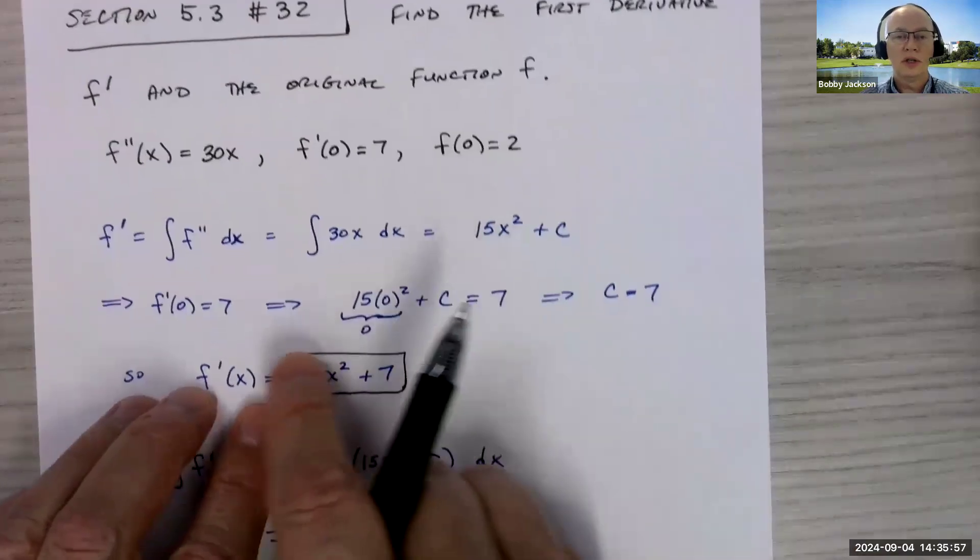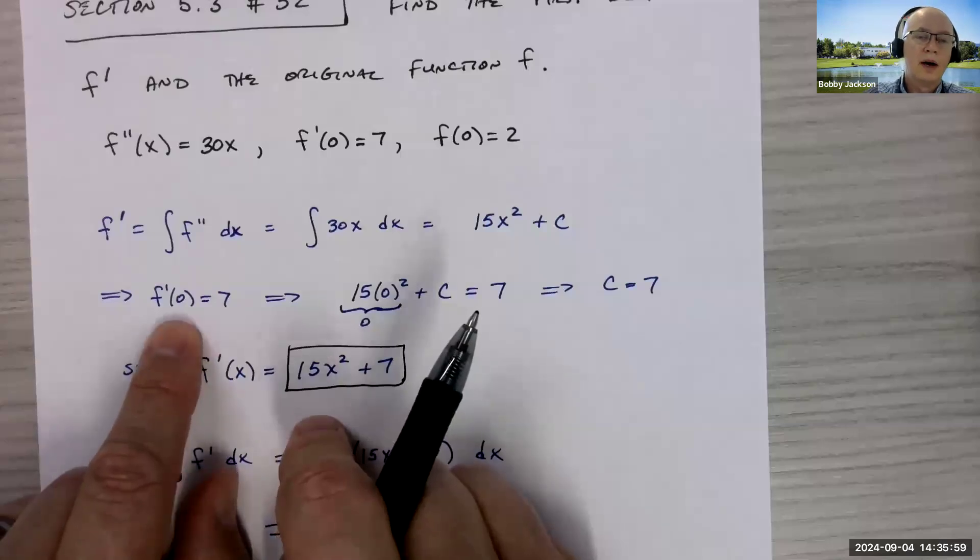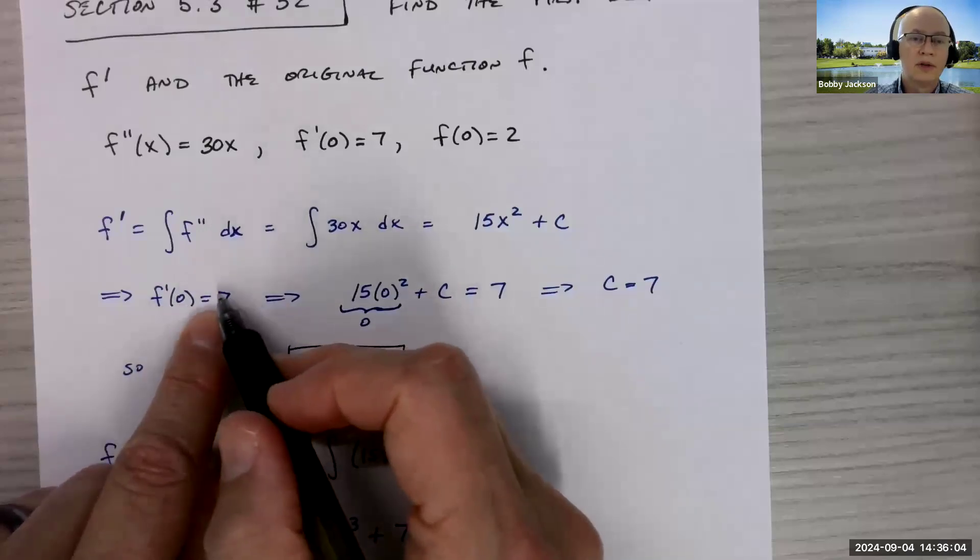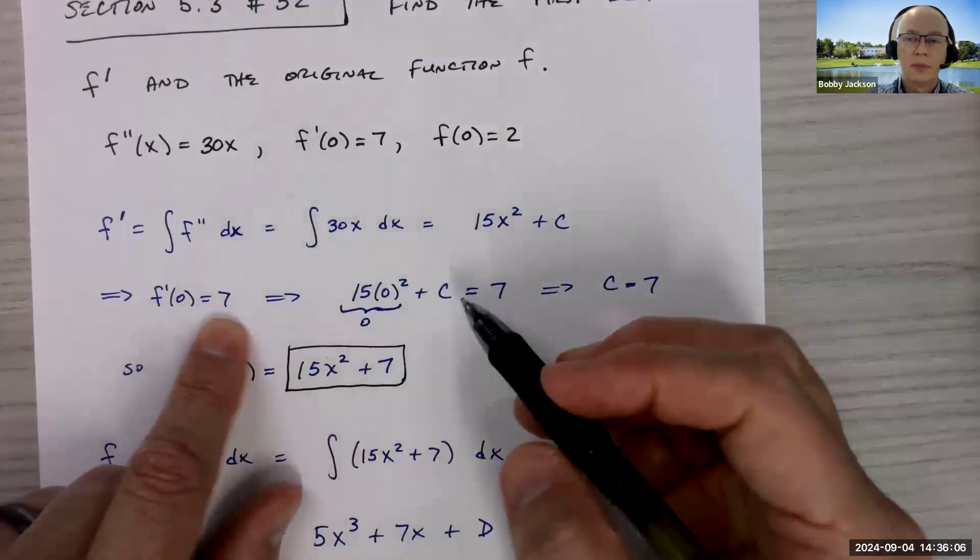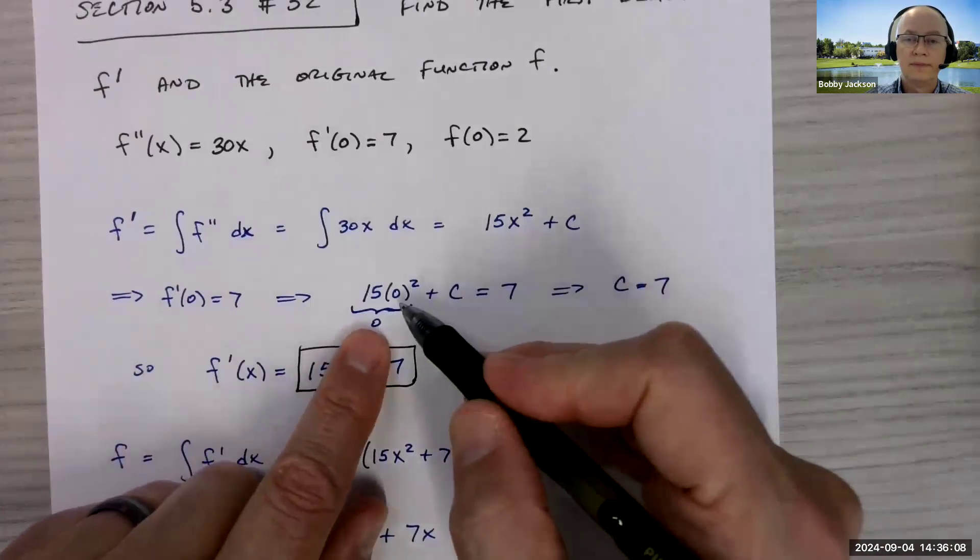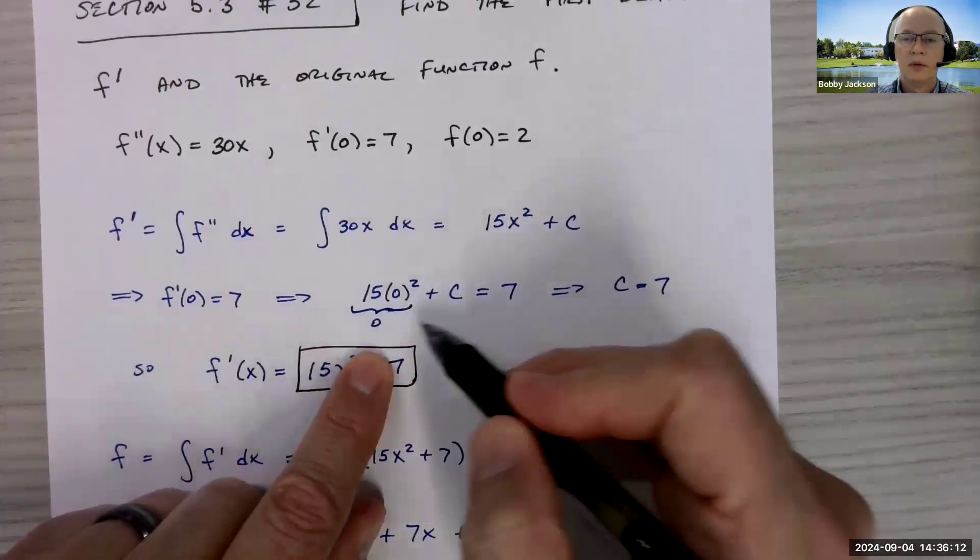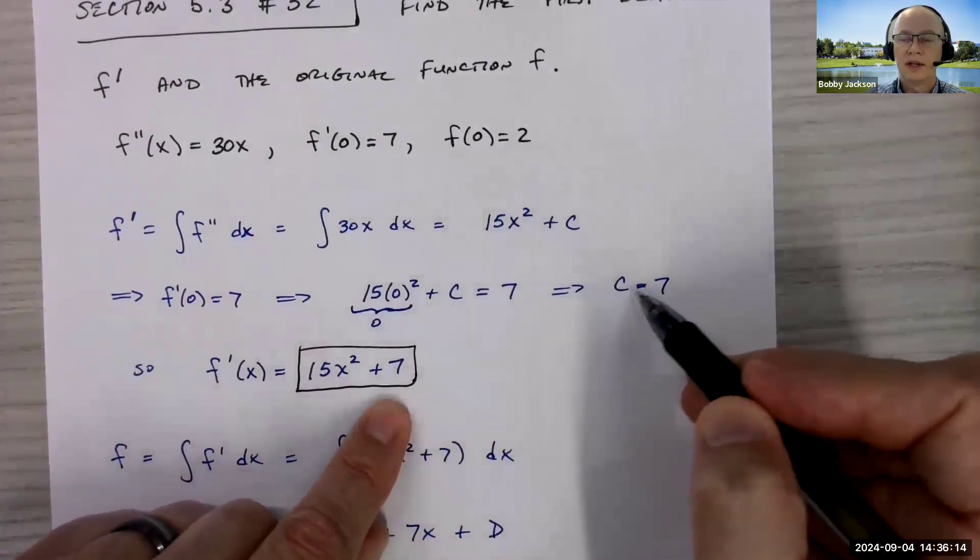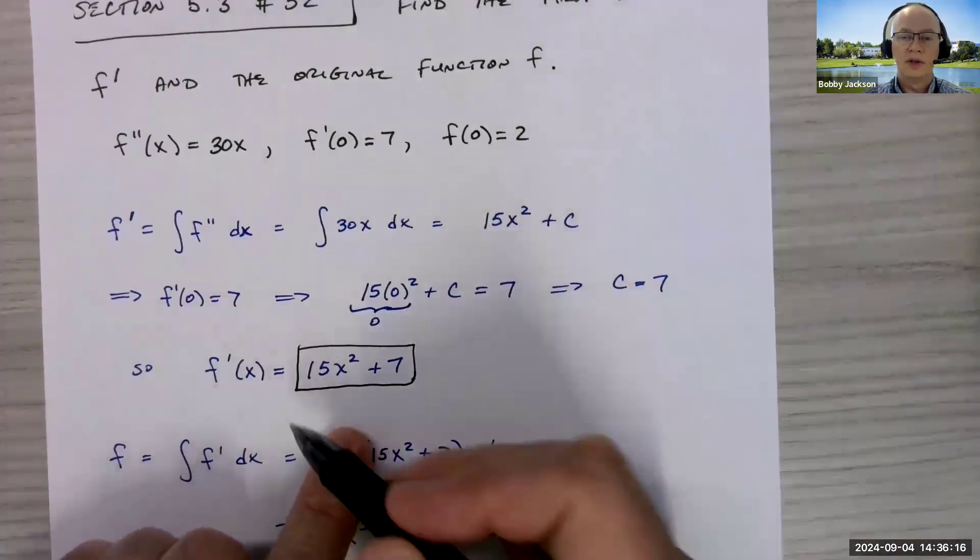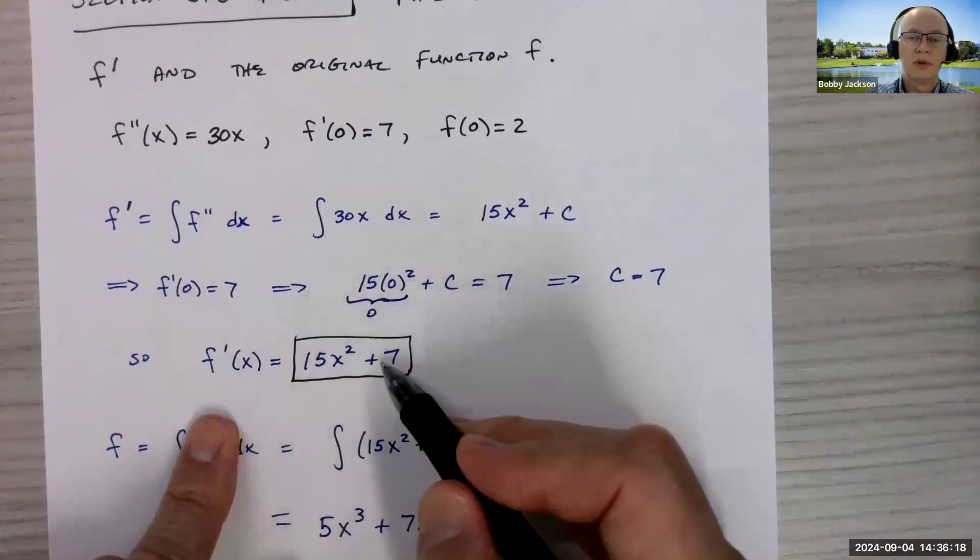Now the initial condition says the derivative, when we plug in x is zero, we get the derivative is seven. So I'm gonna plug in x equals zero here into our derivative and set that equal to seven. Well, this is zero and so I get c equals seven. And so here's my derivative, 15x squared plus seven.